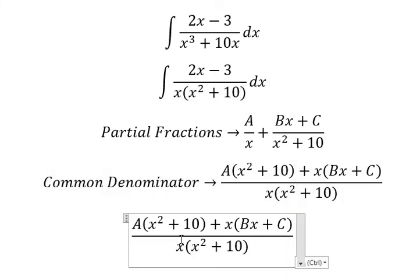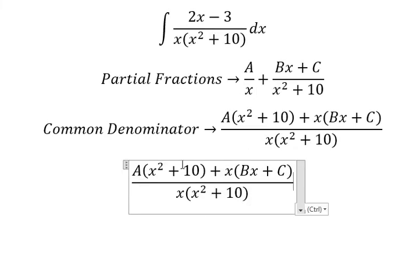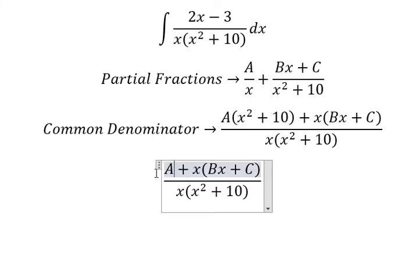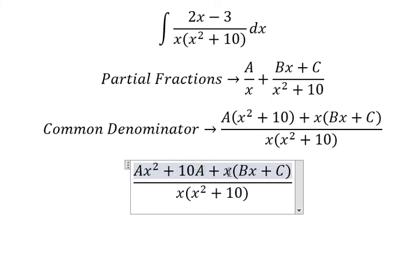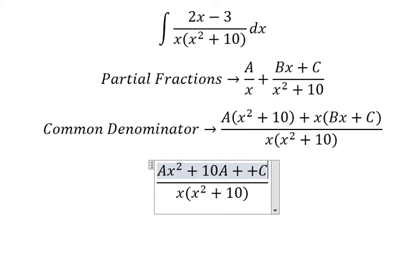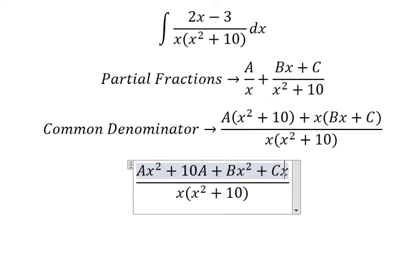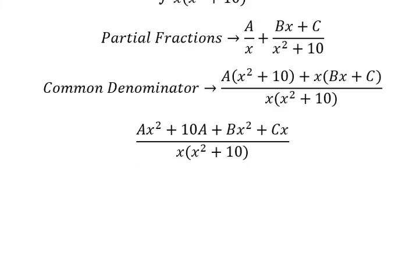Now we need to expand. We will have A times x squared plus 10a, then x multiplied by bx and c, giving x squared plus cx. Next we need to arrange based on the term of x.